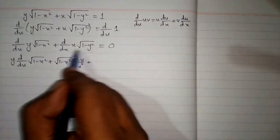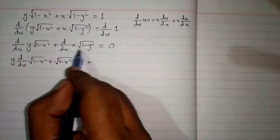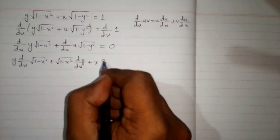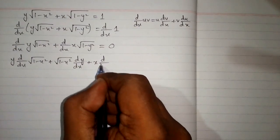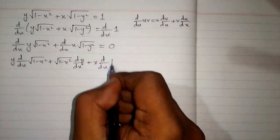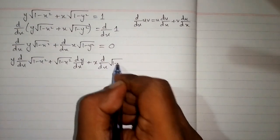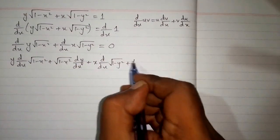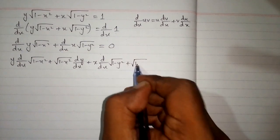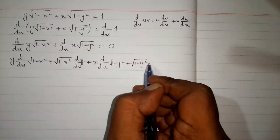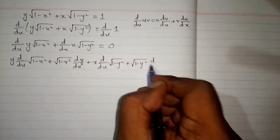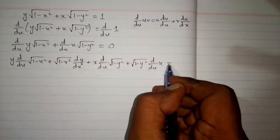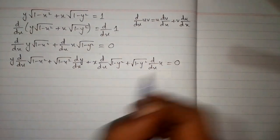Then again we will apply the product rule over here. So first we write x times the derivative of square root of (1 minus y squared), then plus square root of (1 minus y squared) times the derivative of x, and this is equal to 0.